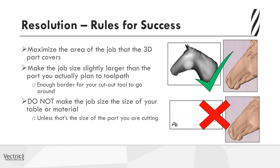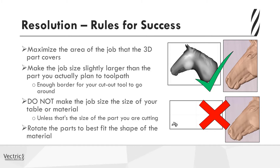It's very important to maximise the area of the job that the 3D area covers. A good idea is to look at the parts you plan to toolpath and add an inch or a couple of centimetres around the parts, assuming it's large enough to accommodate any cutout operations. In some situations, you may want to look at rotating the parts to best fit the shape of the material in order to maximise the number of pixels being used, especially if there is lots of white space.